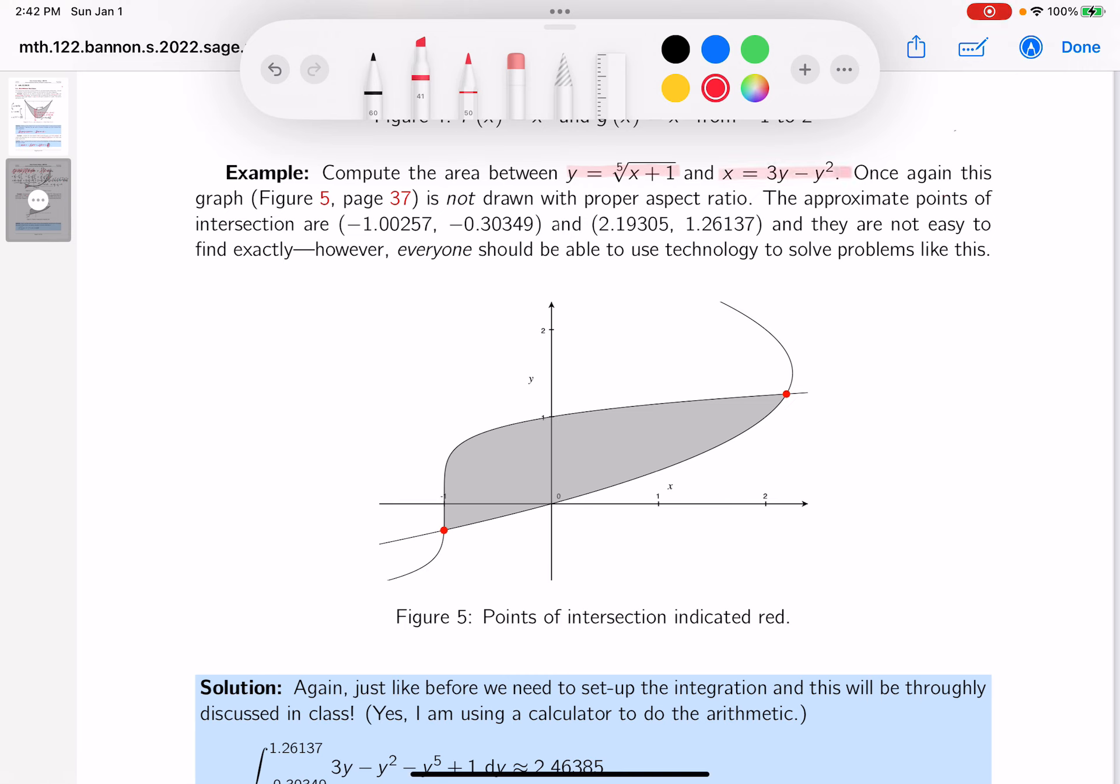The first thing to do is recognize they did give me a picture, figure 5 on page 37. I want to label what these curves are, and I do clearly see the parabola. This is a parabola, by the way.